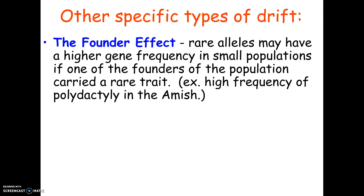There are two other specific types of genetic drift to discuss. The first is called the founder effect: an allele that's normally not very common ends up being more common in a small population because one of the founders — one of those who started the population — had the trait. The example some textbooks use is polydactyly, or extra fingers, in a group of Amish, because one of the founders had that particular trait. Since they're a small, closed population, the trait has become very common compared to the general population.